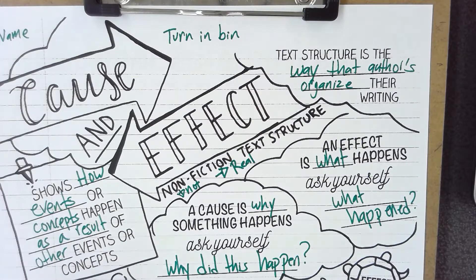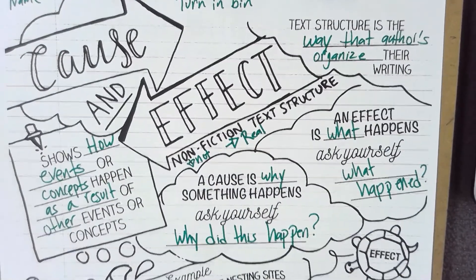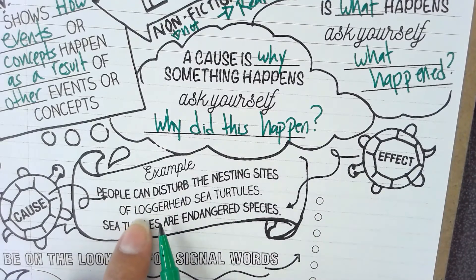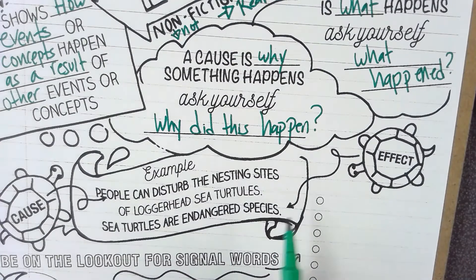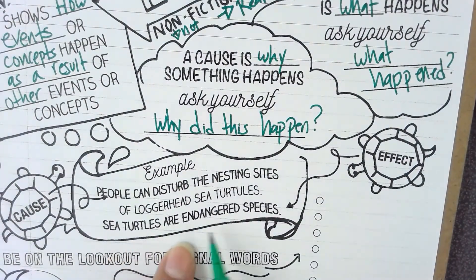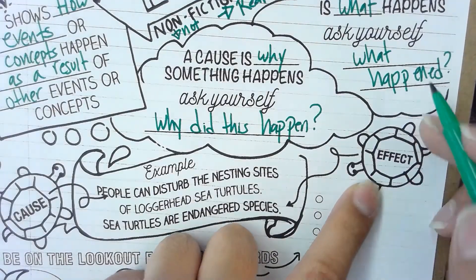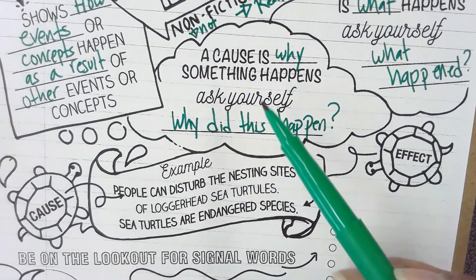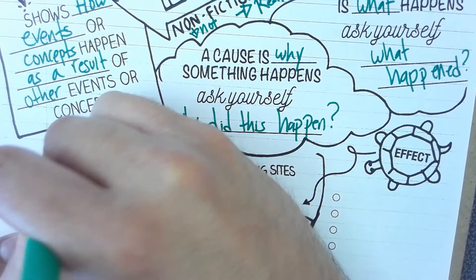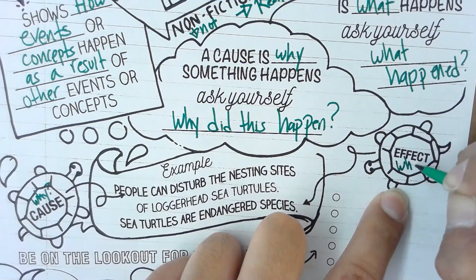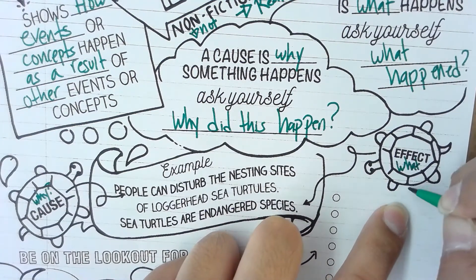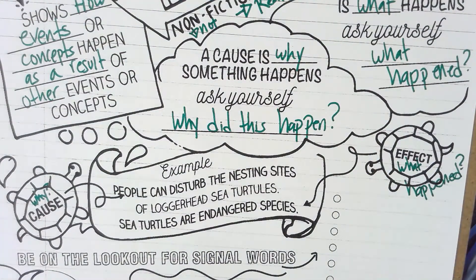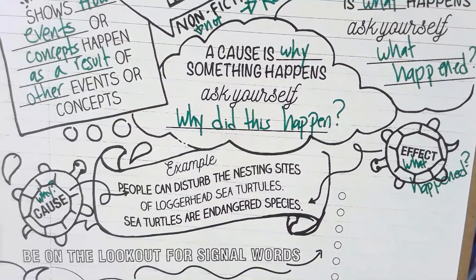Now let's move on to our example. People can disturb the nesting sites of the loggerhead sea turtles — that's our cause. Our effect is sea turtles are now an endangered species. The why is always the because, so let's put 'why' next to cause and 'what happened' next to effect. Because people were disturbing the nesting sites of the loggerhead sea turtles, they are now endangered.